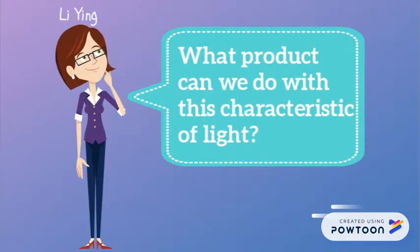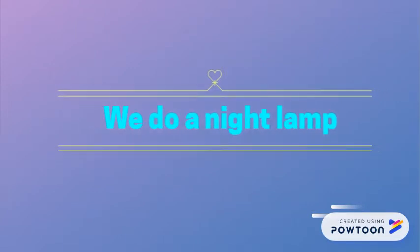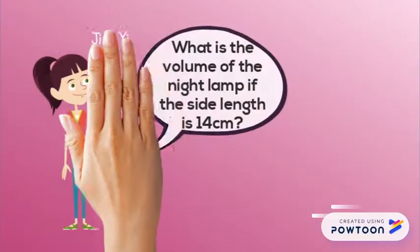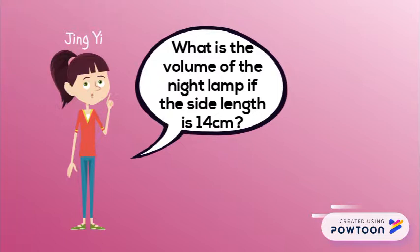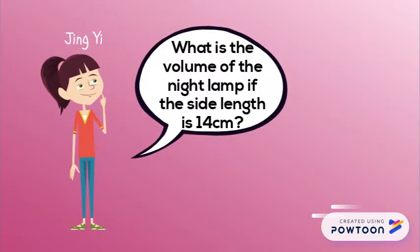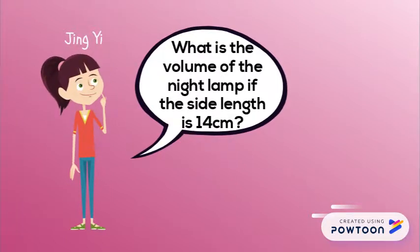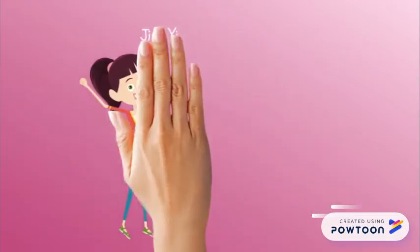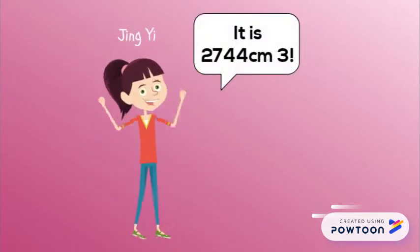What product can we make with this characteristic of light? We make a light lamp. What is the volume of the light lamp if the side length is 14 cm? It is 2744 cm³.